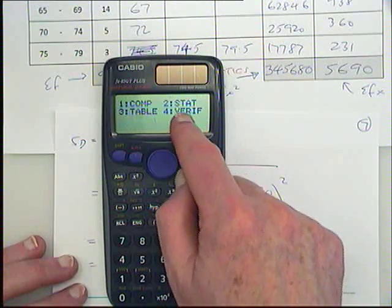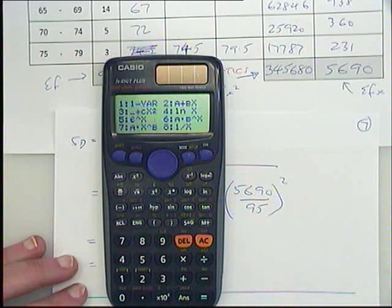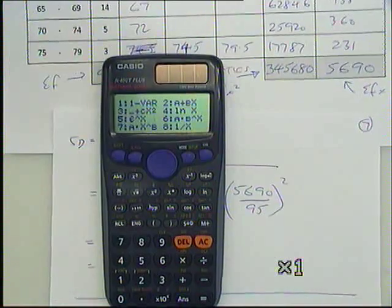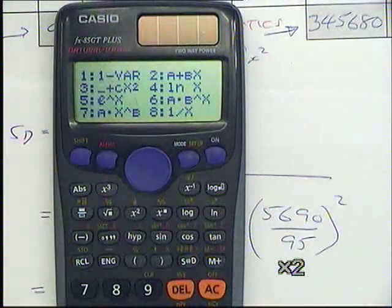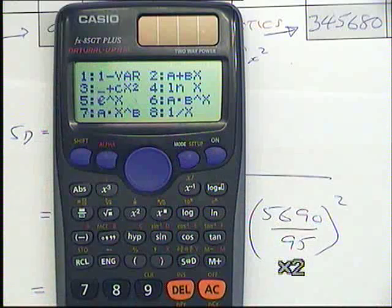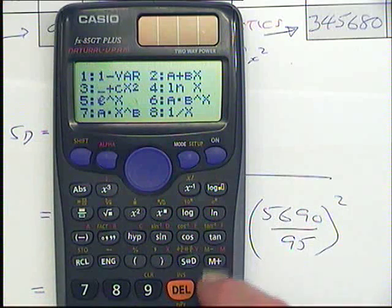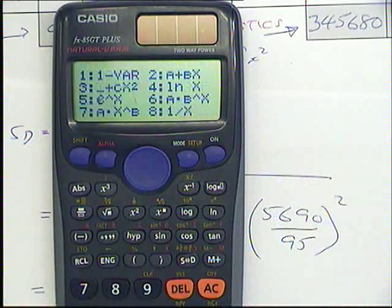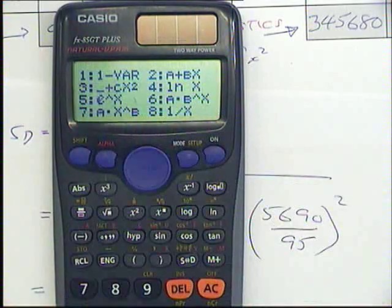Now, the sort of thing you're looking for on calculators is stats mode. So on this one here, if I do mode 2 for stats mode, I get this thing here. Now, we're dealing with one variable only. So that is one var for one variable. We haven't got x numbers and y numbers. I'll go through that bit again. On this calculator, I did mode. I chose 2 for stat and then 1 for one var.